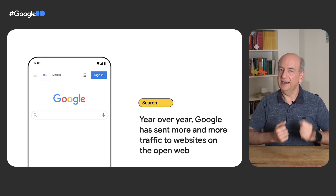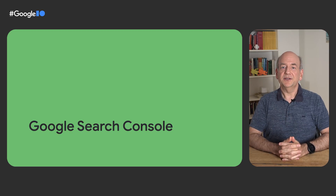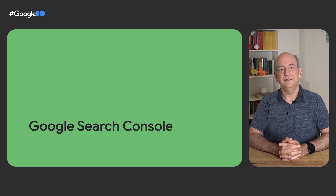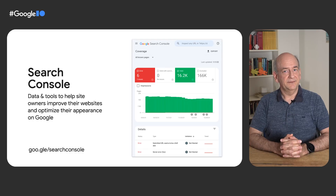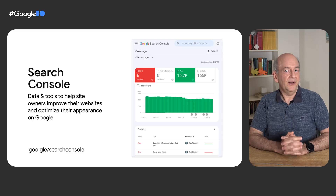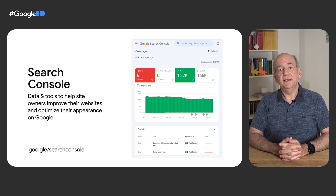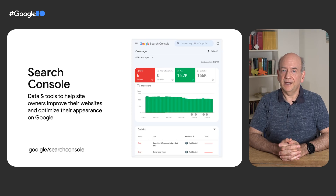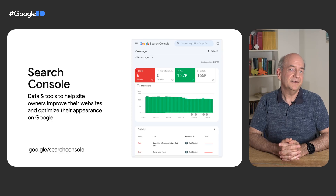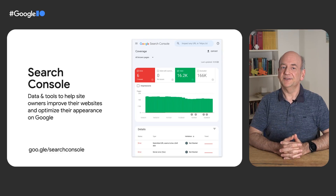So let's dive right in. Google Search Console is the primary tool from us for understanding how a site is doing in Search. It's available to all owners of websites. It includes reports on the site status, its performance, and provides settings and diagnostics tools. There's a lot already available on Search Console, so we'll focus on just a small part. There are links to more information in the description.